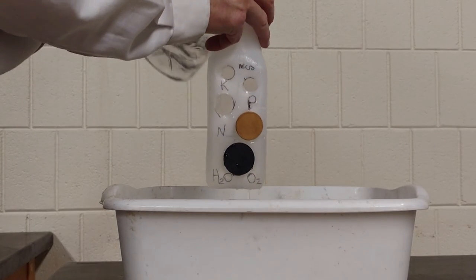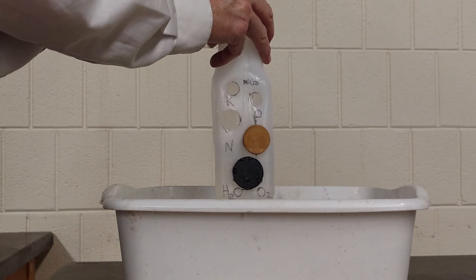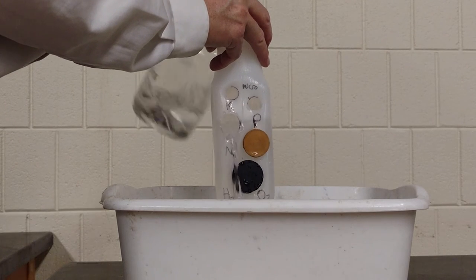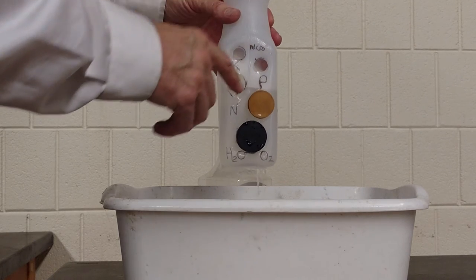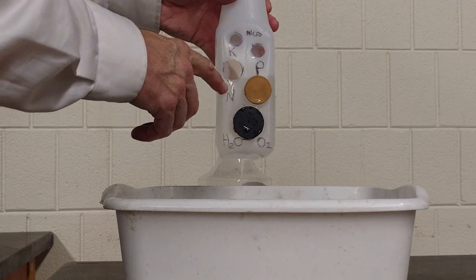So again, increase our yield potential until another factor becomes limiting. And in this case, that other factor is phosphorus.